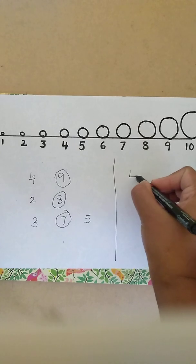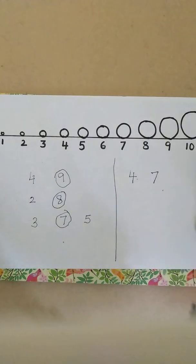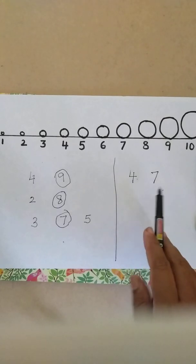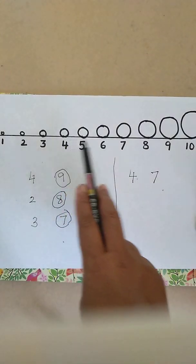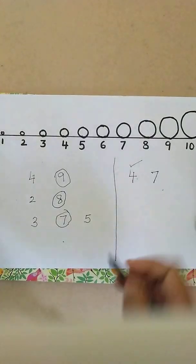Here again, you can ask the child to recognize the smaller number. Is 4 smaller or 7 smaller? Check which circle is small: 4. So 4 is the smallest number.